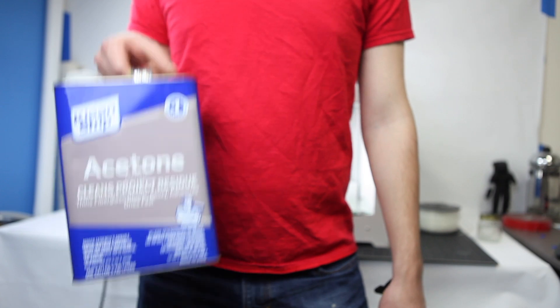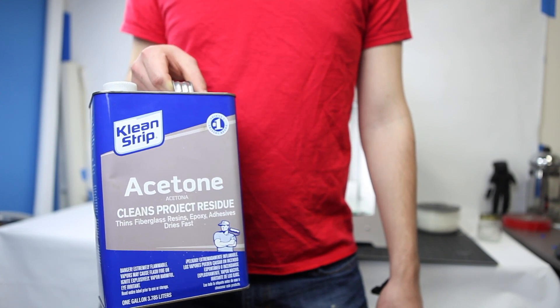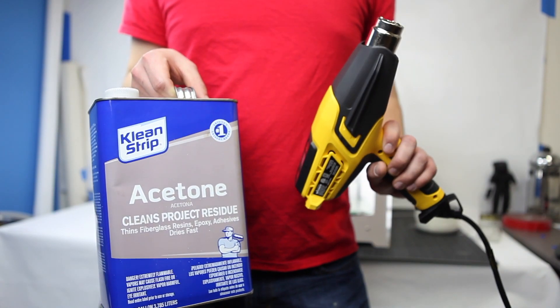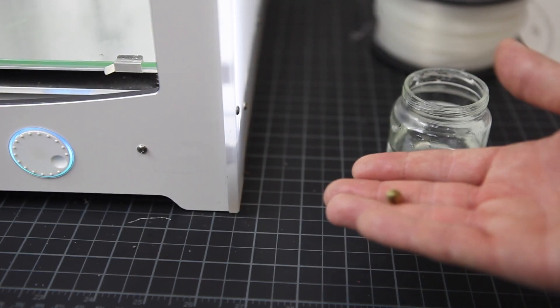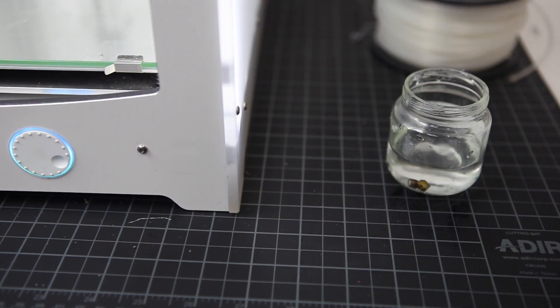With the nozzle removed, use chemicals to dissolve the filament and wash out the clog, or use heat to burn it out. If your printer clogged after using ABS, simply drop it in a container of acetone and the ABS will dissolve away.